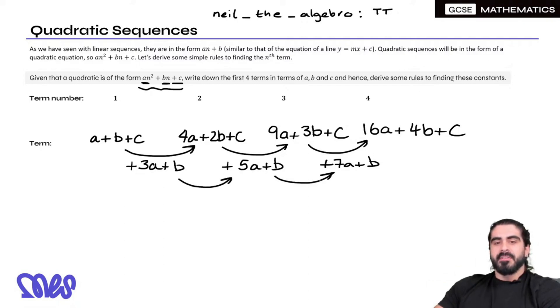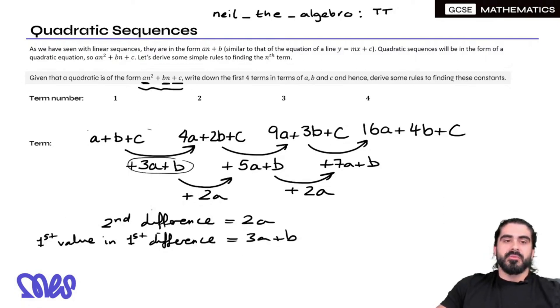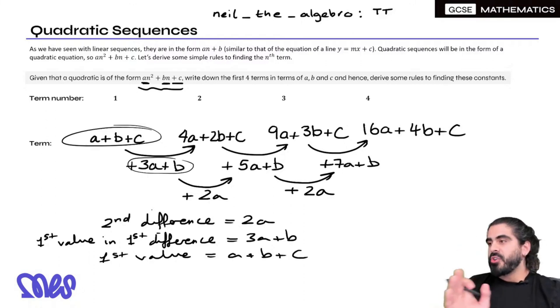So guys, what do you notice you have to add to go between these terms? What do you notice you need to add to go to each term in the differences? 2a, good. It's constant. It's a constant 2a. So guys, this is what you have to remember with quadratic sequences. The second difference is 2a. Then the first value of the first difference is 3a plus b. Then finally, you need to remember that the first number, the first value, is just a plus b plus c. Guys, once you remember this, honestly, quadratic sequences are so easy. And they're worth 3 or 4 marks in the exam. But you're going to notice how simple it is. But you just need to remember these three things.